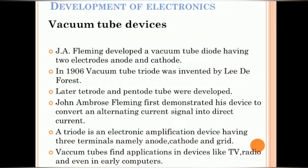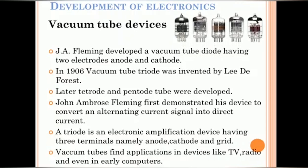A triode is an electronic amplification device having three terminals namely anode, cathode and grid. Vacuum tubes find wired applications in the early generation electronic devices such as television, radio and even in early computers. So, this is the vacuum tube device you can see there.